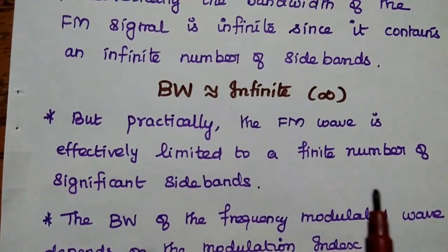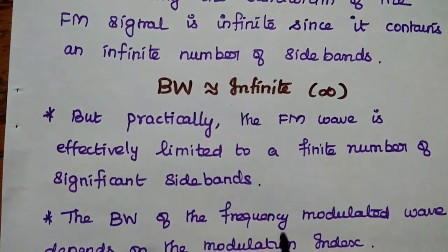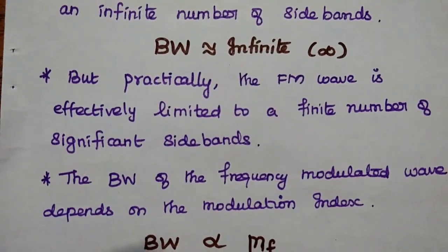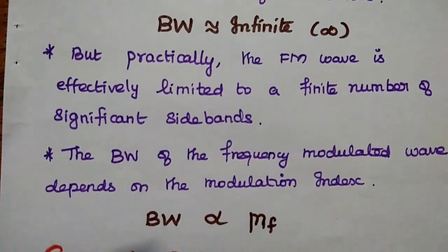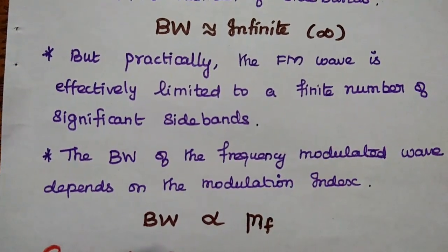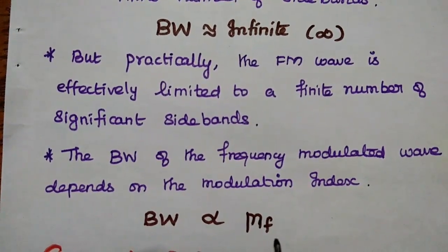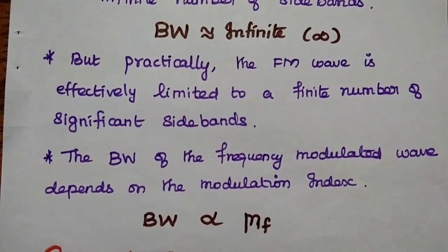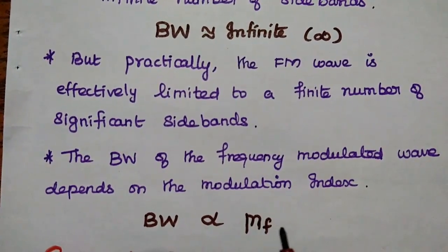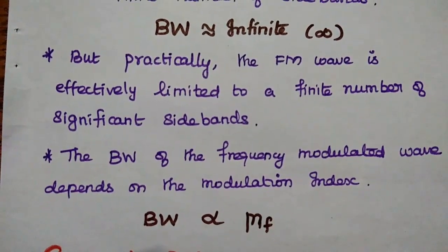Here, finite number means it is a reasonable number which are required to transmit the signal effectively. The bandwidth of the frequency modulated wave depends on the modulation index of the FM signal — bandwidth is proportional to the modulation index. In order to find out the transmission bandwidth of a frequency modulated signal, Carson's Rule is used.